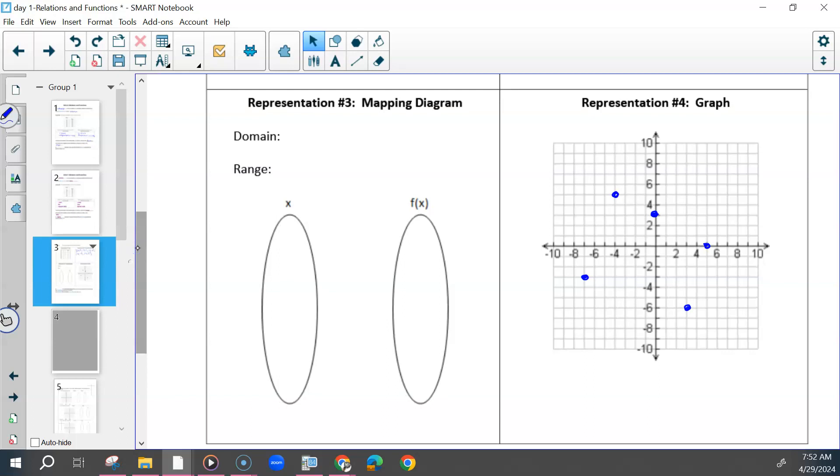And then when we list our domain, when we do the mapping, we want to list the domain, just the x values in curly brackets, least to greatest. So that would be negative seven, negative four, zero, three, and then five. And when you list out the numbers, you don't want any repeats. So if two ordered pairs have the same x or y values, you wouldn't list that twice. And then do the same thing for the range, least to greatest, so negative six, negative three, zero, three, and then five.